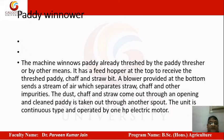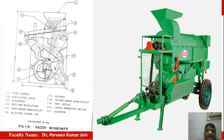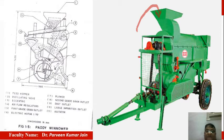The machine has a feed hopper, and dust, chaff, and straw come out through one opening while clean paddy is taken out through another. The unit is of continuous type and operated by a one-horsepower electric motor. The sketch shows the design, and the actual machine is a paddy winnower where grain mixture is fed in and a fan system driven by the motor helps in separating grains from the chaff.